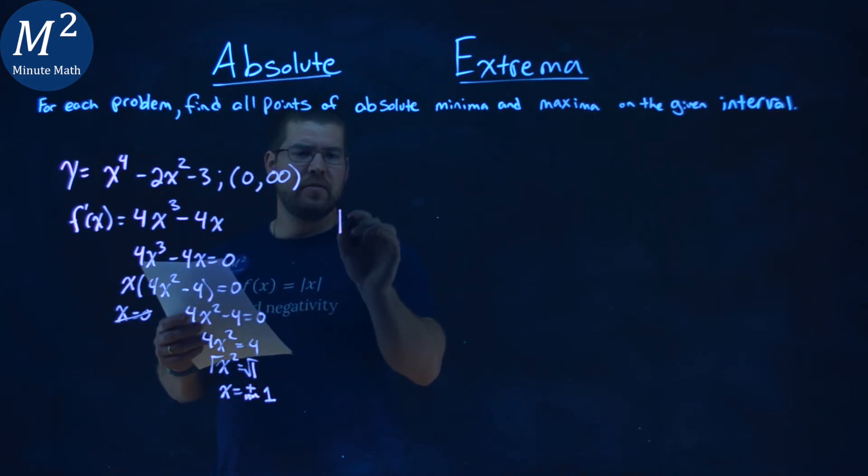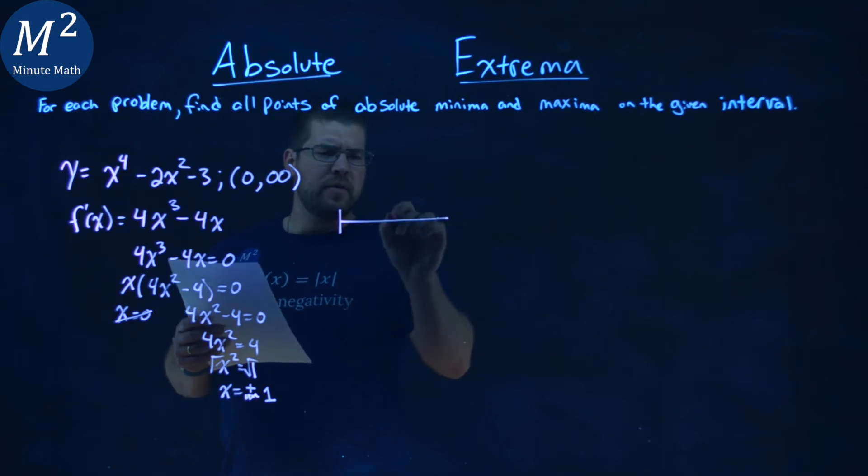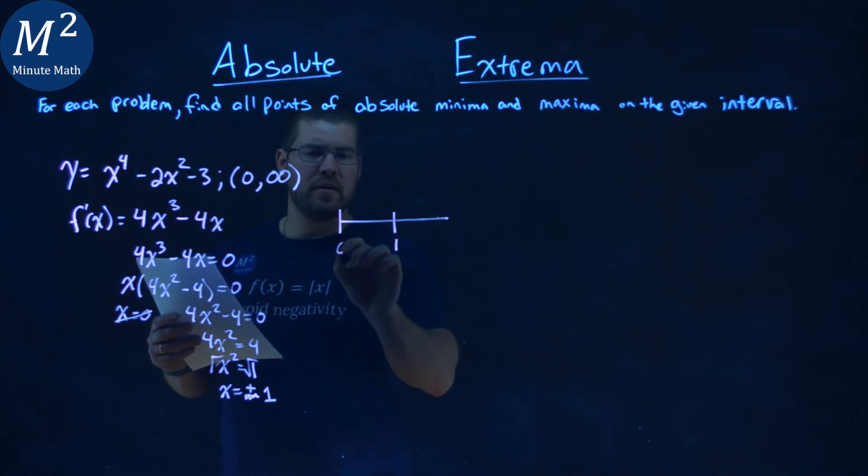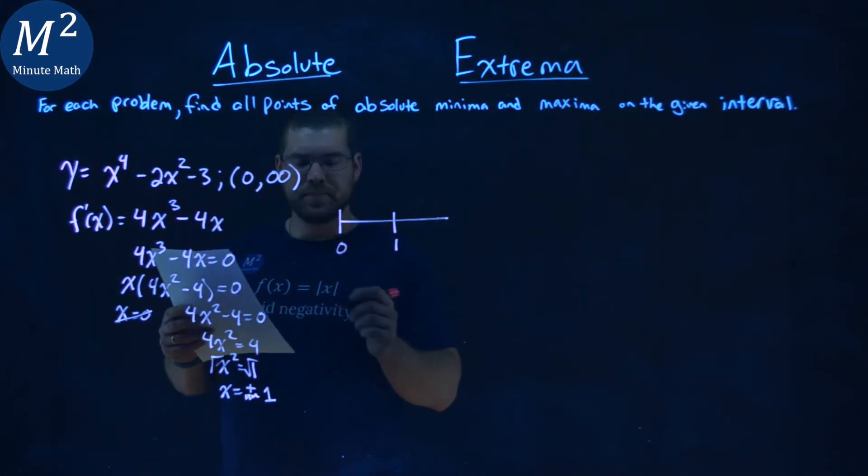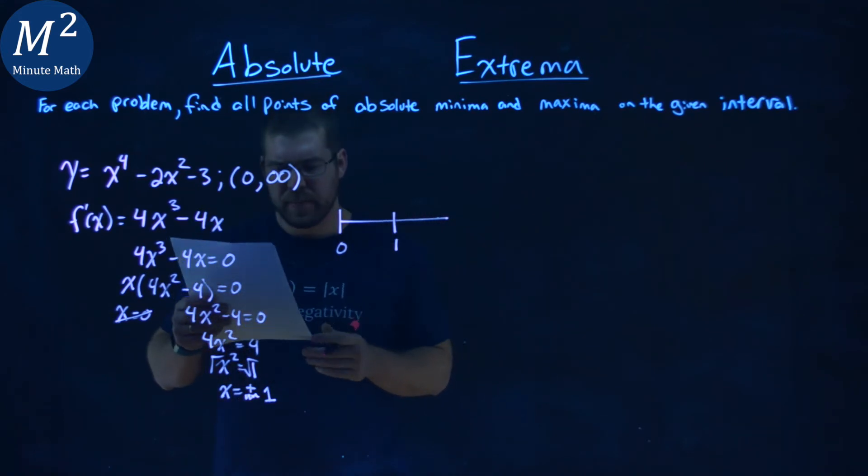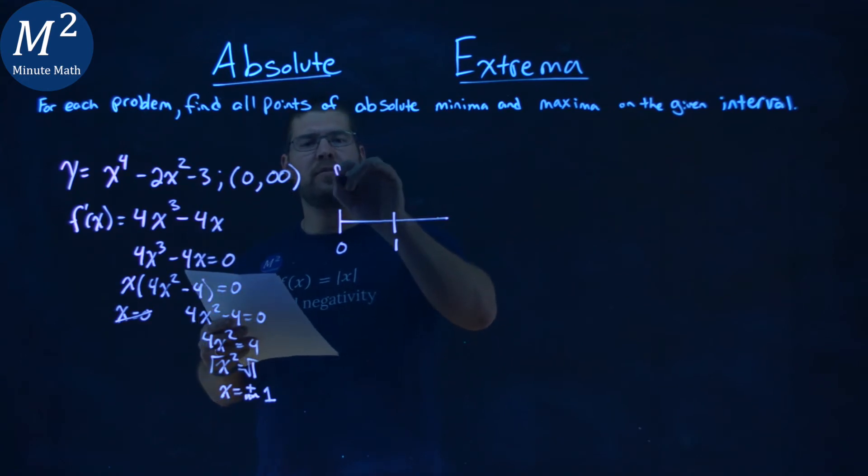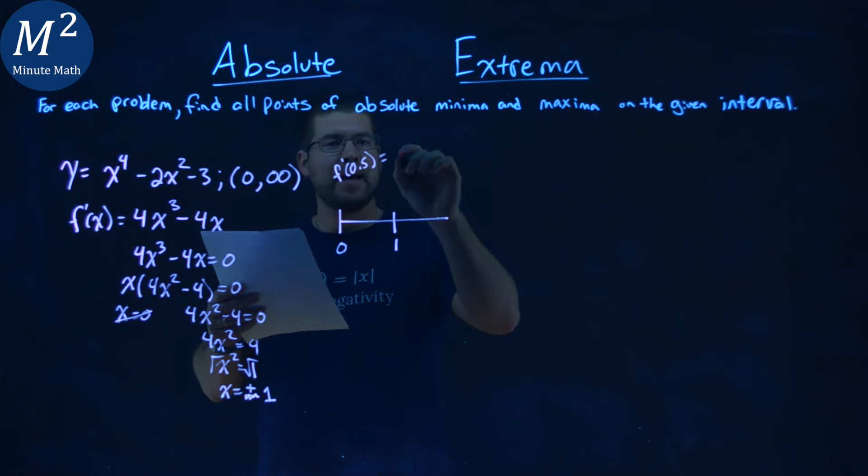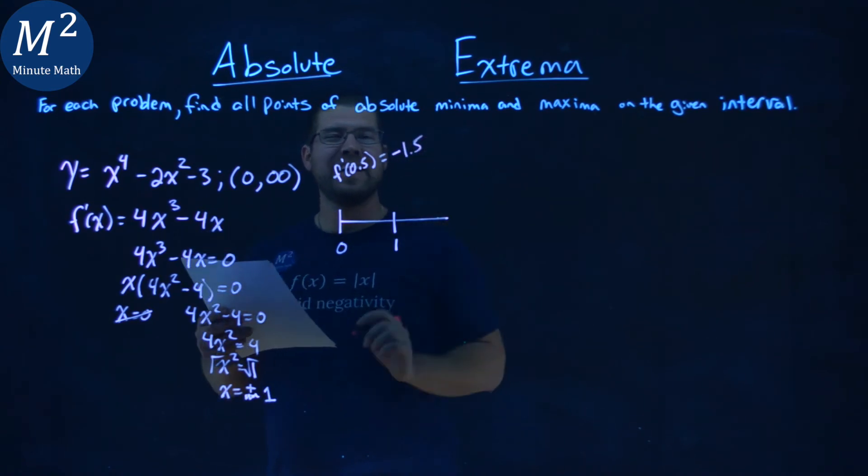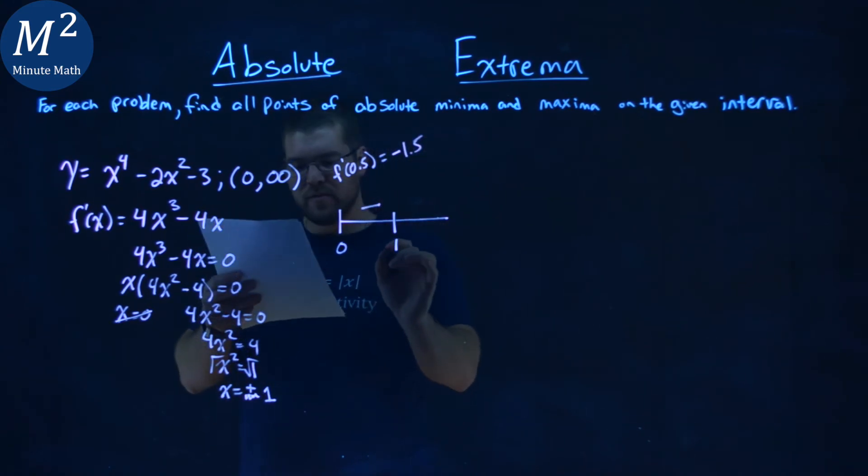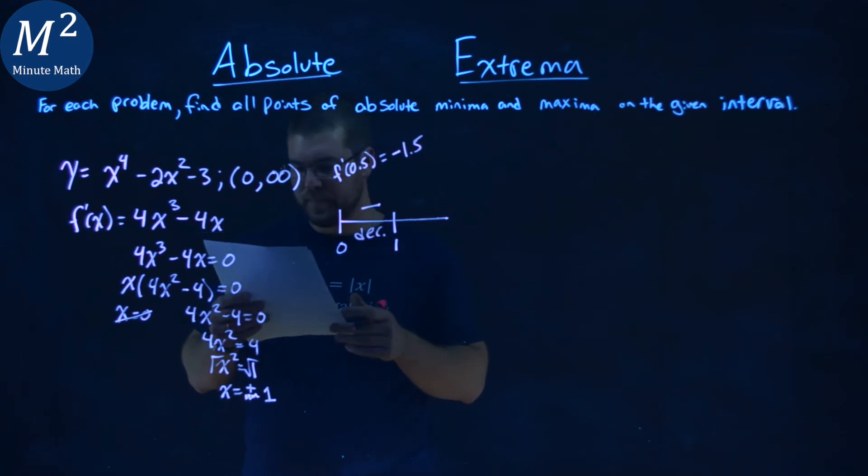Okay, so we're going to use that value here. I like to make this kind of like a first derivative test here. I have a 1 here, 0, and notice nothing to the left of it, and I'm not going to include 1. Now, let's go see what's going on. I pick a value between 0 and 1, I picked 0.5, and f prime of 0.5, plug into my derivative, and I get negative 1.5. I just care that it's negative, so we are decreasing here.